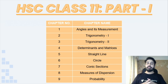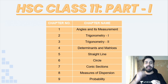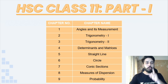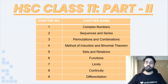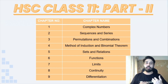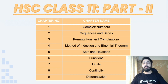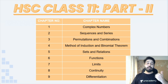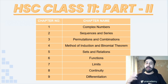For HSC Class 11 Part 2, the chapters include Complex Numbers, Sequence and Series — where you will cover Geometric Progression and Harmonic Progression in addition to Arithmetic Progression you have already studied — Permutations and Combinations, Method of Induction, and Binomial Theorem.